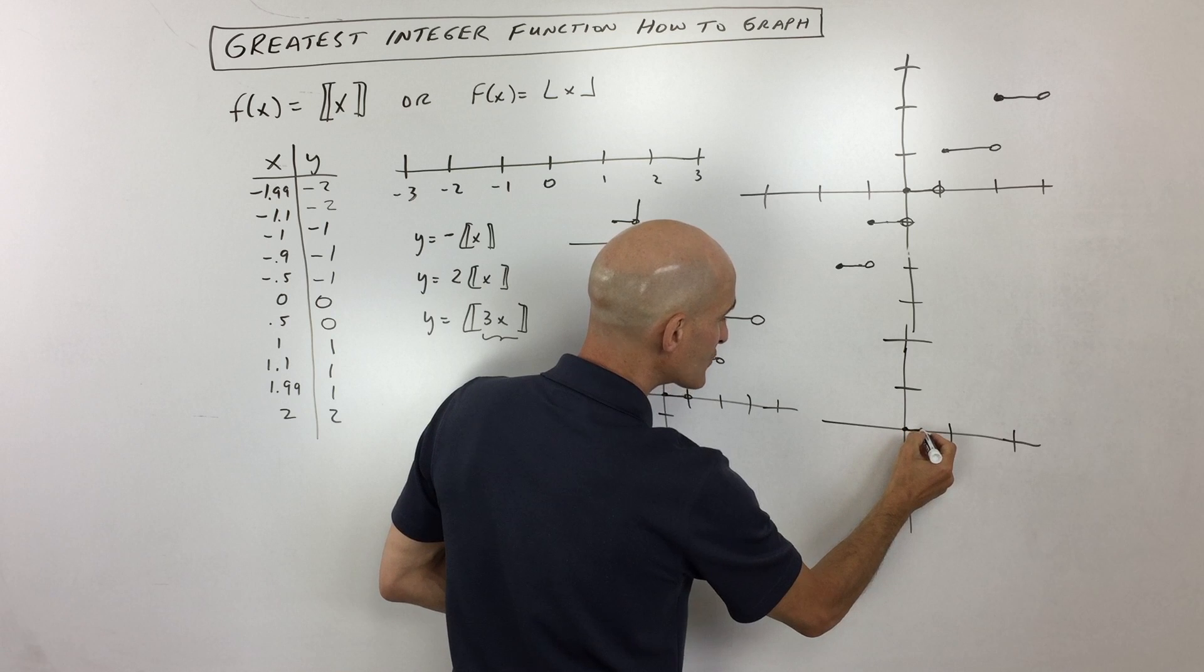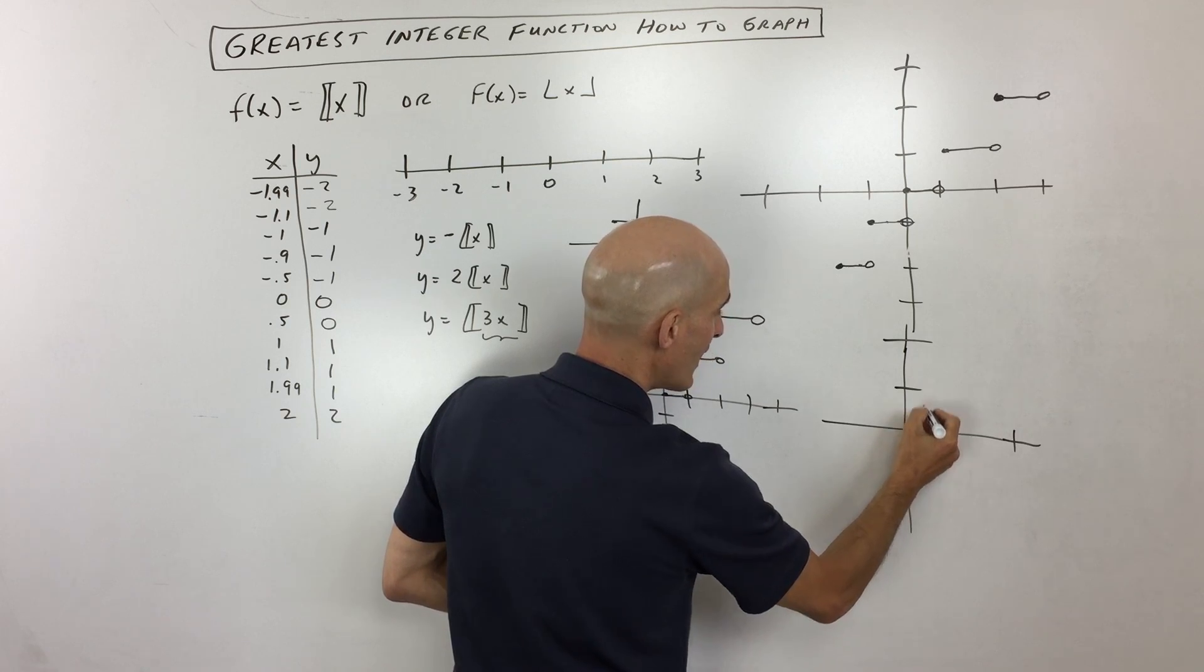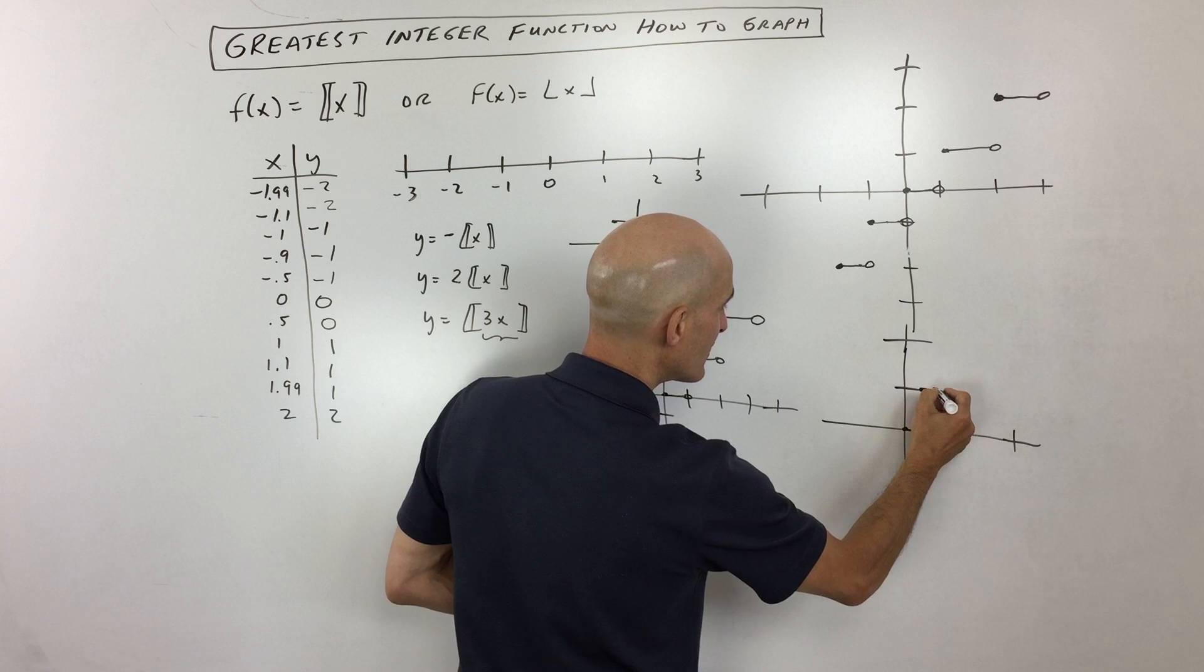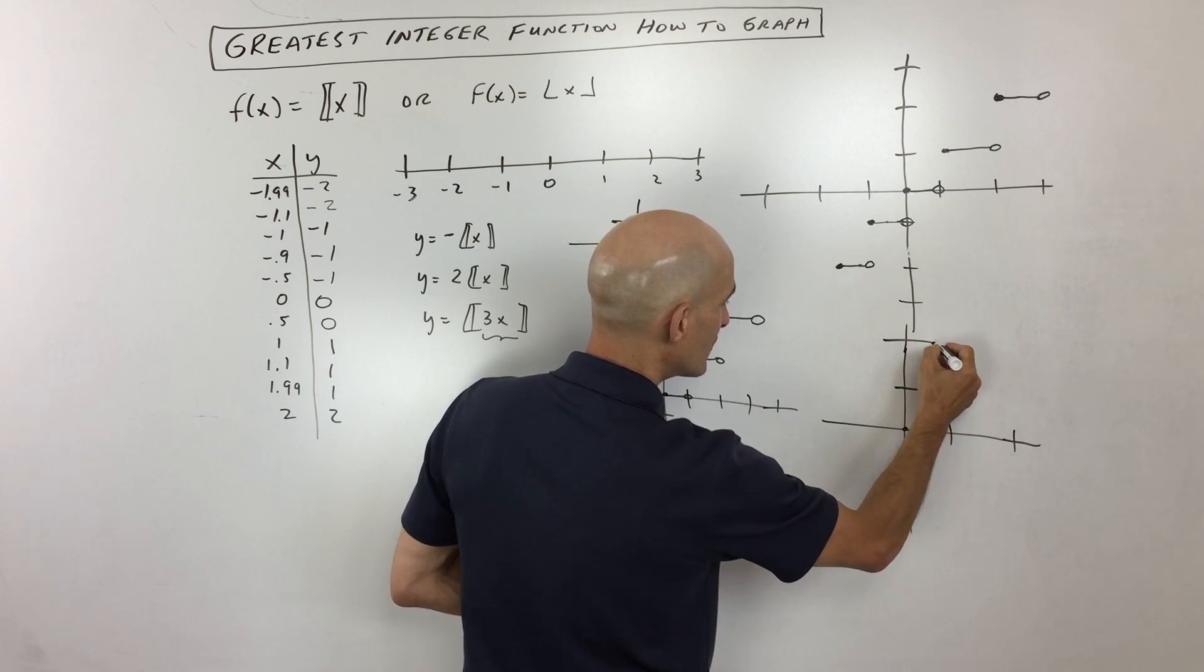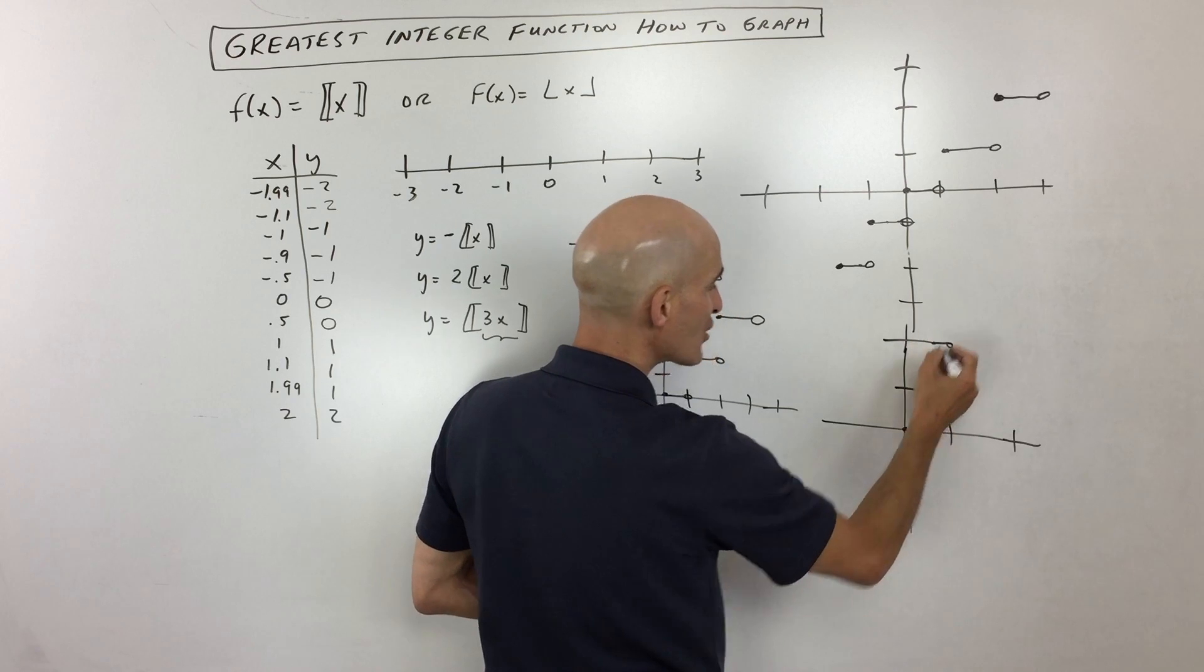You would say, I'm going up to 1 third, then I'm jumping up to 1, then I'm going to 2 thirds, then I'm jumping up to 2, then I'm going over here to 1, then I'm jumping up.